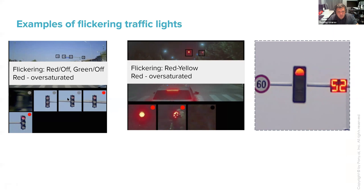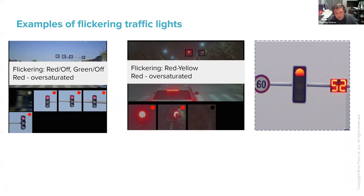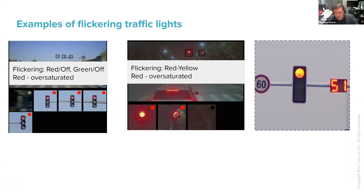Here is an example of a flickering LED traffic light which is red, but we see it as blinking red and black. Here is another example we call 'white flickering,' where it actually over-saturates and appears white — you can only use the halo to detect it. On the right is another example where red changes to yellow due to flicker, because only the red channel saturates and the image becomes yellow.